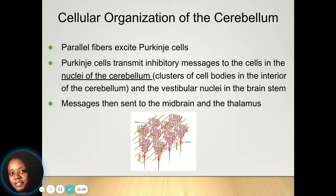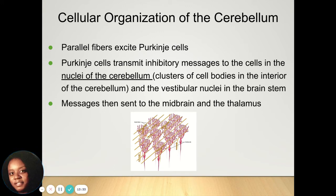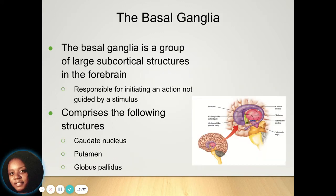Purkinje cells transmit inhibitory messages to the cells in the cerebellum and the vestibular system. Those messages are then sent to the midbrain and the thalamus for processing.